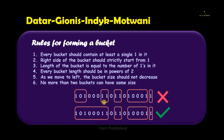To revise all six rules: every bucket should contain at least a single one; the rightmost bit of the bucket should always be one; the length of the bucket equals the number of ones inside it; every bucket length should be a power of two; as we move from right to left the bucket length should always increase and never decrease; and no more than two buckets should have the same length.